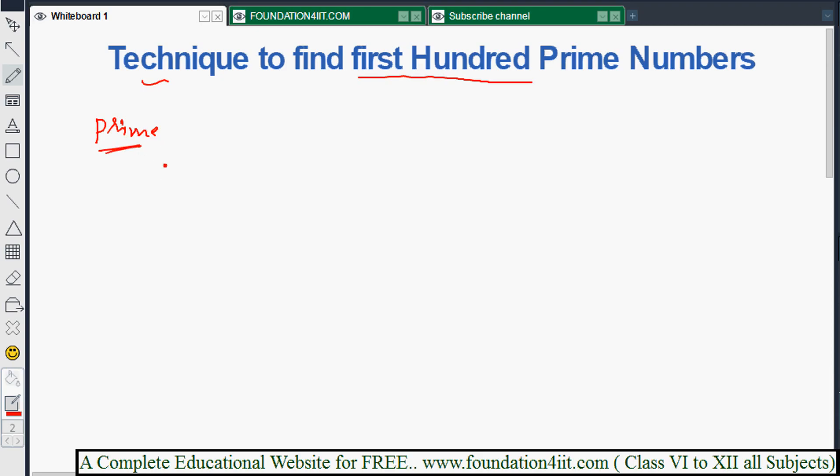I'll show you how to find prime numbers between 1 to 100, and you can use the same technique for 1 to 200 as well. Let me explain the technique now.